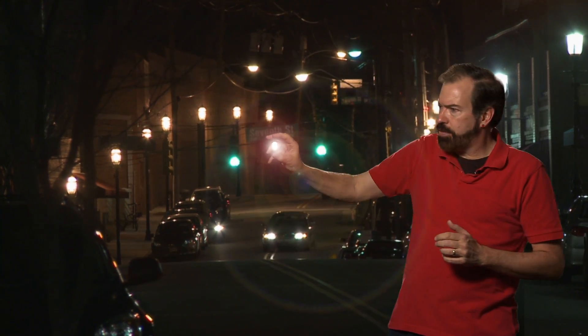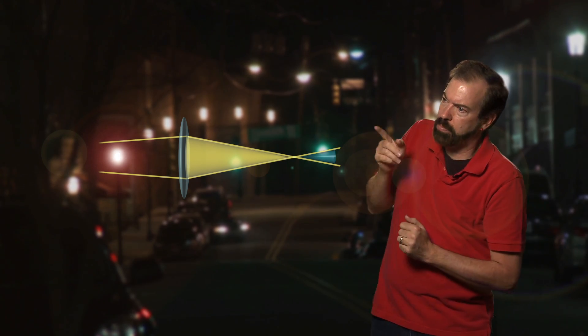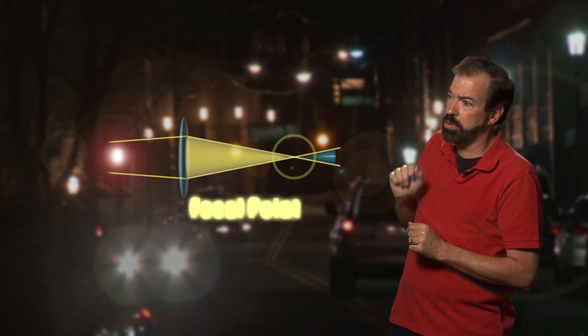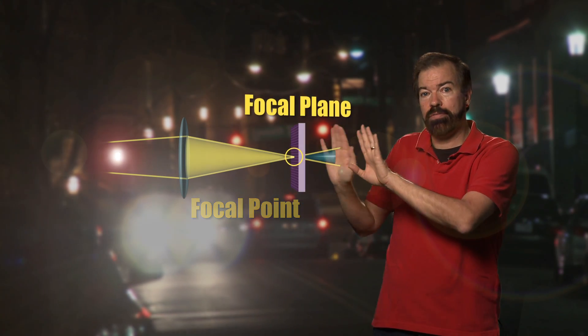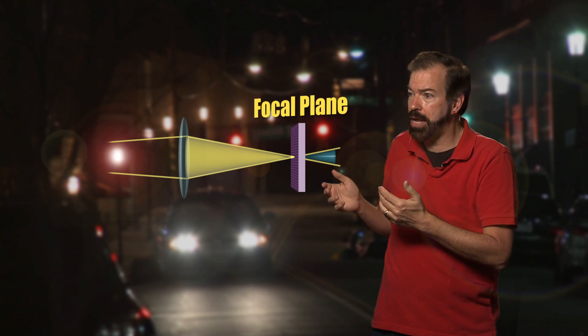Take any point of light from in front of the lens. Light from that point passes through the lens and is bent to a matching point behind the lens. That point of convergence where the beams come together and cross each other is called the focal point. When the focal point falls exactly on the focal plane, which is the flat surface behind the lens where the camera's film or light sensor is located, that subject is in sharp focus.